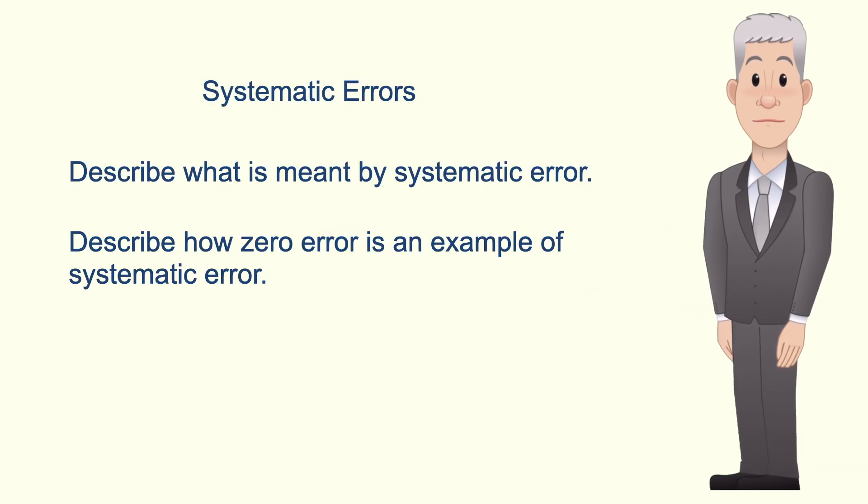Hi and welcome back to Free Science Lessons. By the end of this video you should be able to describe what's meant by systematic error. You should then be able to describe how zero error is an example of systematic error.